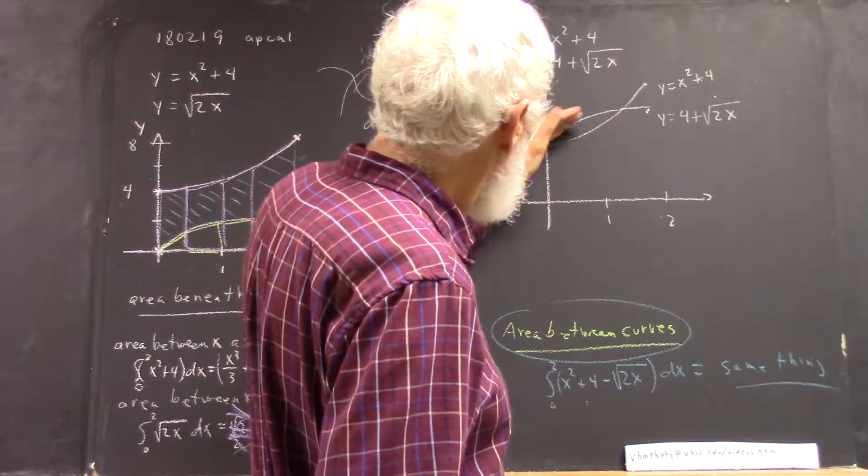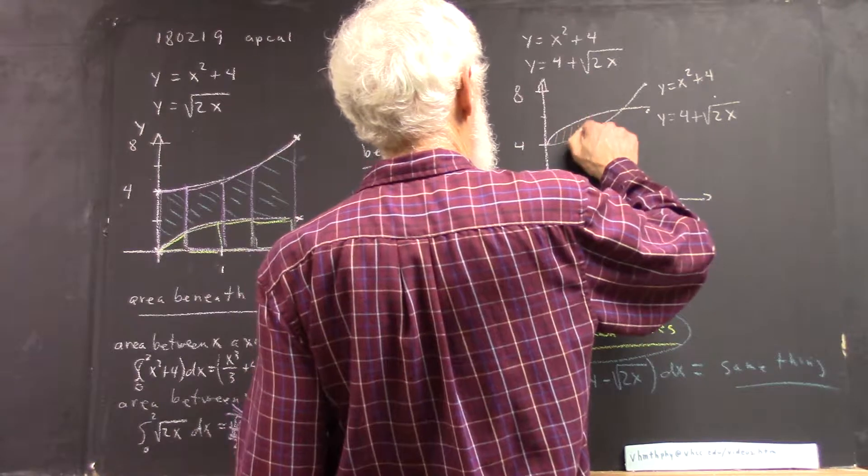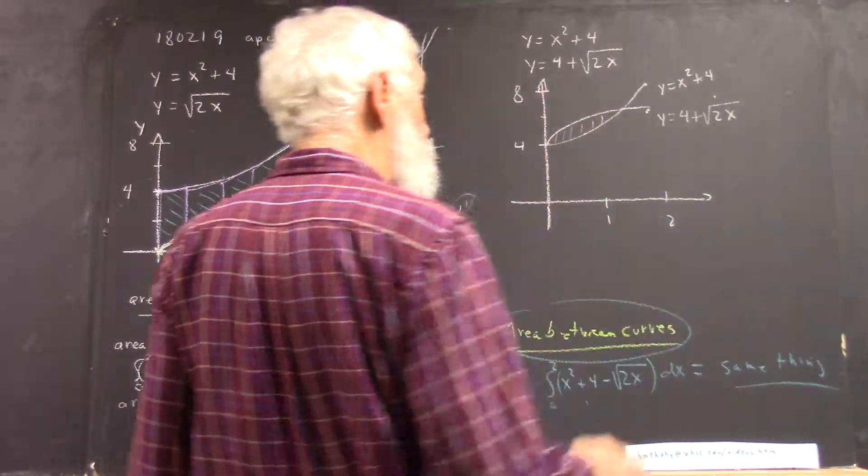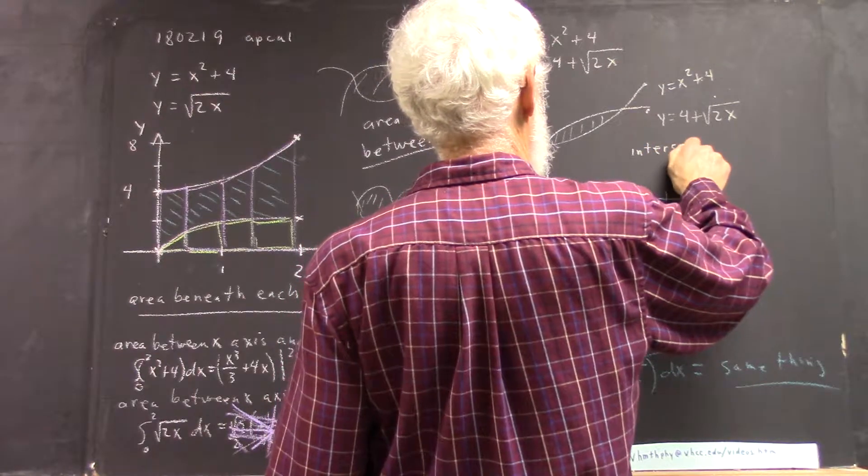So clearly the graphs are going to cross, and we're going to have some region in between the graphs. The question is, where's the intersection point?